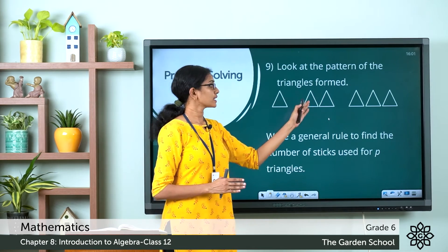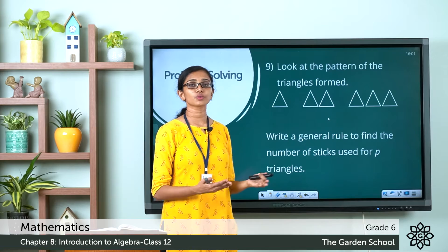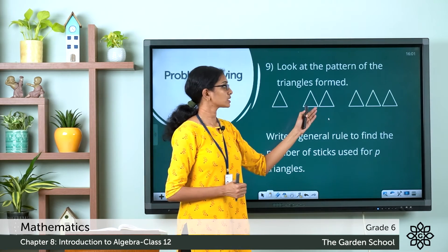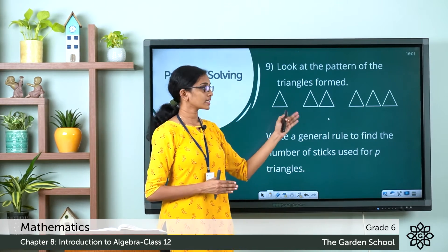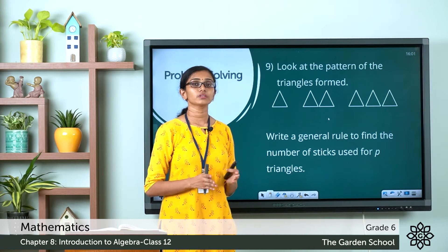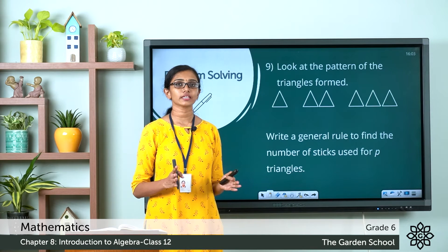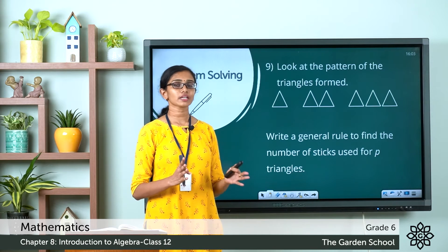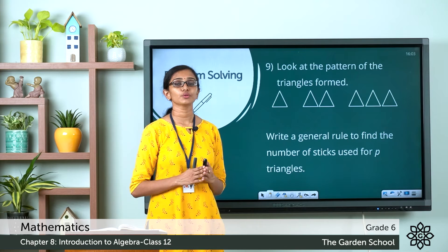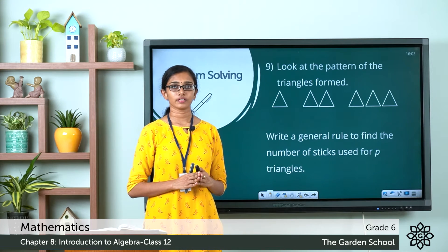For 2 triangles, you need 3 plus 3, or 3 into 2, which equals 6 sticks. For 3 triangles, you need 3 plus 3 plus 3, or 3 into 3, which equals 9 sticks. As you observe the pattern, for a given number of triangles, the number of sticks used equals 3 multiplied by the number of triangles.